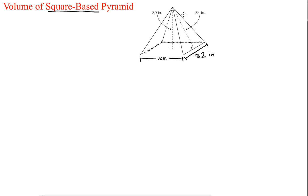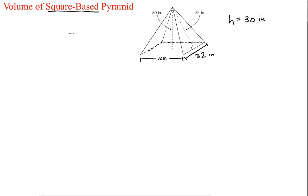The other two measurements you'll see here: the height is 30 inches, and this diagonal length going down the slanted side of the pyramid — that's called the slant height. We're not actually going to use that for volume; we're going to come back and use that for surface area.